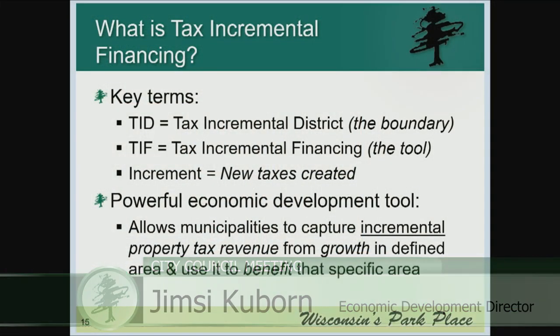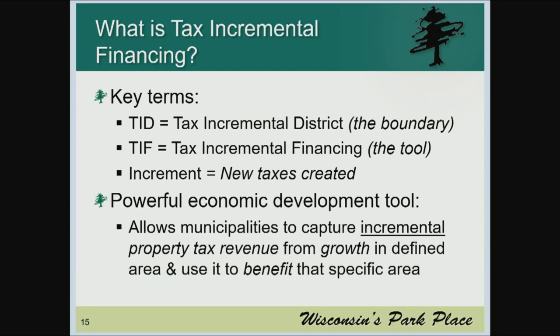We wanted to start off with a few key terms: TID versus TIFF. These get interchanged quite frequently. The TID is the Tax Incremental District — that is the actual boundary created as part of the community. The TIFF is the Tax Incremental Financing — that's the actual tool, the TIFF development agreement, the incentive component. The goal is to create new increased increment: the new taxes created because you're incentivizing different projects to come within your community. It is a powerful economic development tool, and we capture that increased increment for growing our community.